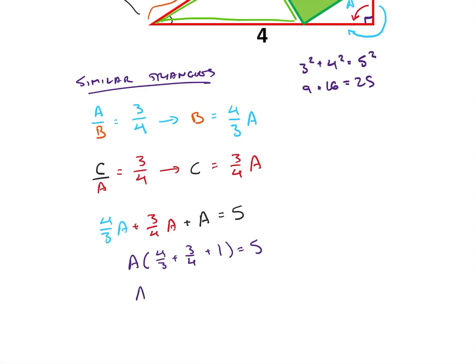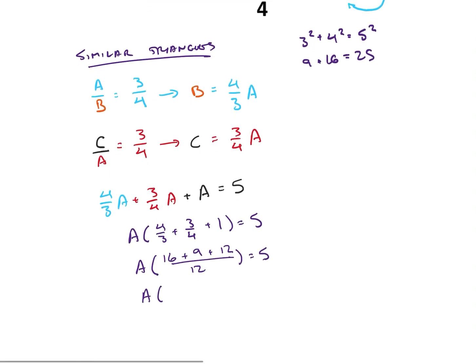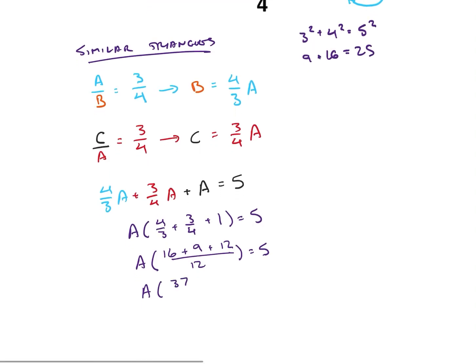Finding common denominators, this is going to be a common denominator of three and four is 12. So this is going to be four times four, which is 16 plus three times three, which is nine plus 12 divided by 12 is equal to five. So we get a times 16 plus nine is 25 plus 12 is 37. So 37 over 12 is equal to five, giving us that the side length is going to be five times 12, which is 60 divided by 37.